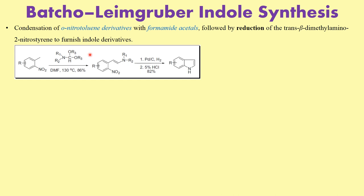This particular indole method involves a condensation of ortho-nitro derivatives — specifically the ortho-nitrotoluene derivative with formamide acetals (DMF-DMA), which is an acetyl derivative of formamide. You end up getting a beta-styrene derivative with the nitro group present at a specific position. When you carry out hydrogenation and reduction, the nitro group is converted to an amine, which undergoes cyclization to give you the indole moiety. This is what the entire synthesis is about.